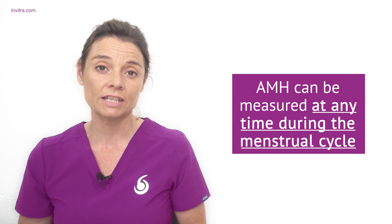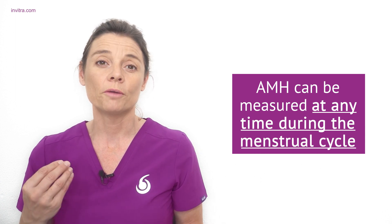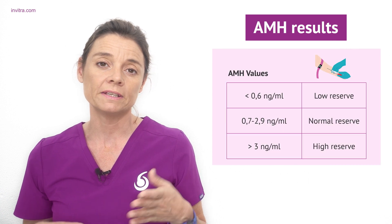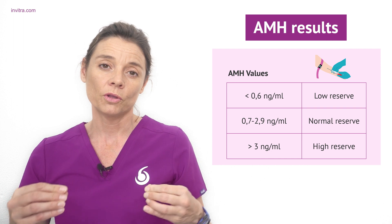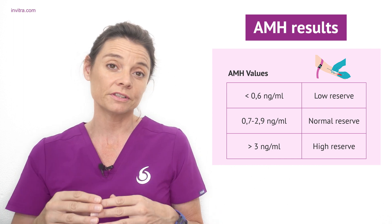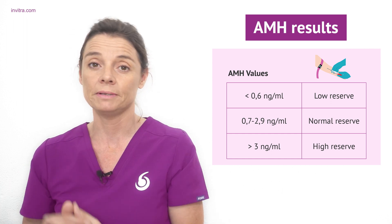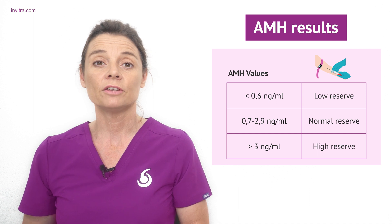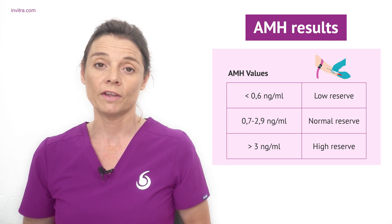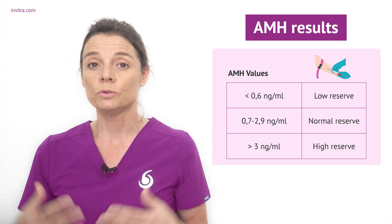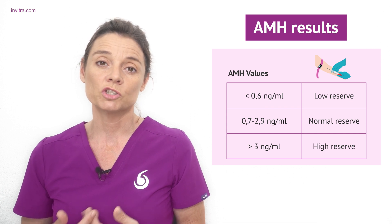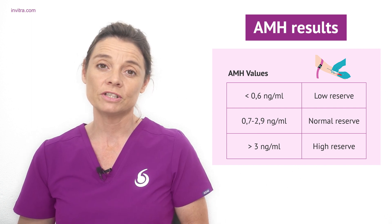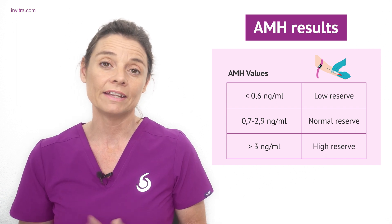One of the advantages of the AMH test is that it can be done at any point within the menstrual cycle, although it is usually done at the same time as the other tests simply for convenience. Normal AMH levels are between 0.7 and 2.9 nanograms per milliliter, although on the lower side of this — 0.7 to 0.9 — does suggest that your ovarian reserve is beginning to become depleted. Values of less than 0.6 nanograms per milliliter show a low ovarian reserve, and values higher than 2.9 nanograms per milliliter show a good ovarian reserve. With high levels of AMH you need to be careful when performing ovarian stimulation so as to avoid risks associated with ovarian hyperstimulation syndrome. It is also important to note that patients with polycystic ovary syndrome can also have elevated AMH levels.